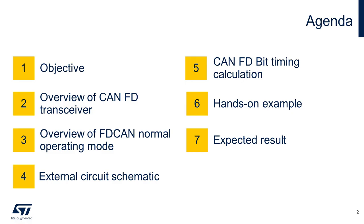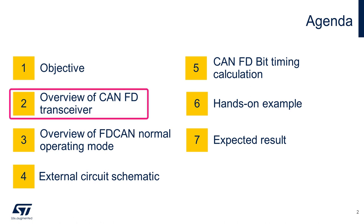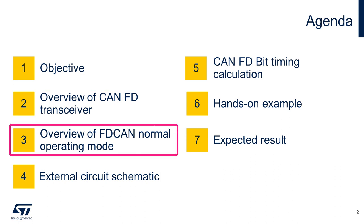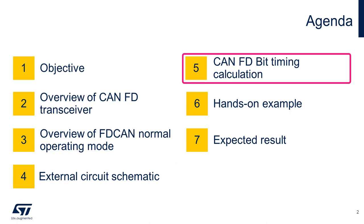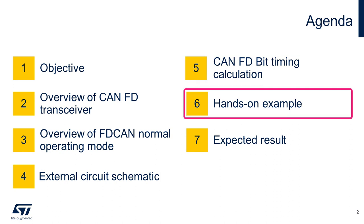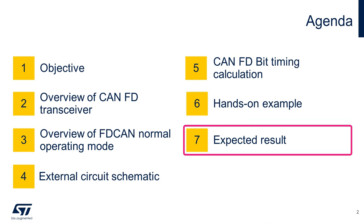The agenda for this video is divided into seven sections. We start with a brief overview of CAN-FD transceiver, then an overview of FD-CAN normal operation mode. Next, we'll review the external circuit. In Section 5, we'll calculate FD-CAN bit-timing using the online bit-timing calculator. Then we begin the hands-on example, review the received data buffer results, and look at the expected oscilloscope signal at the output pin of the Nucleo board.